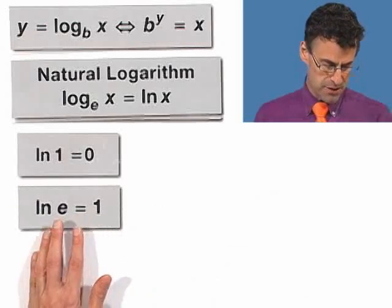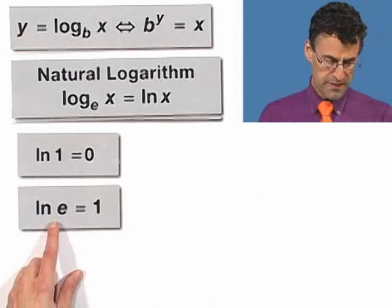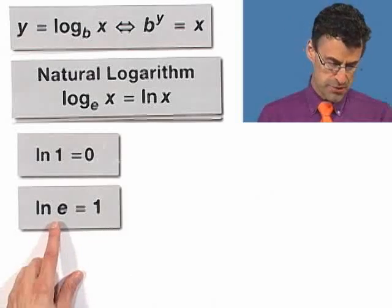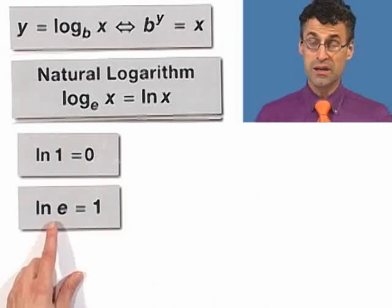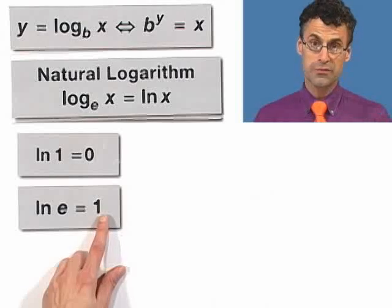Let's take a look at the natural log of e. Well, there's an invisible base e there. So e to what exponent equals e? Well, e to the first. And so therefore, the natural log of e is 1, the first power.